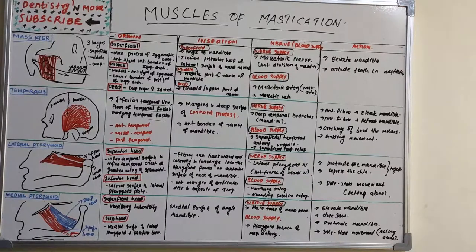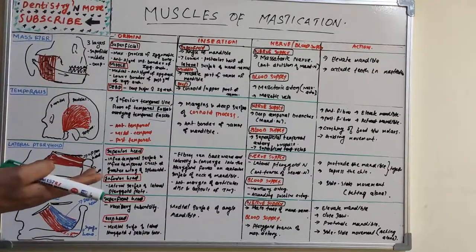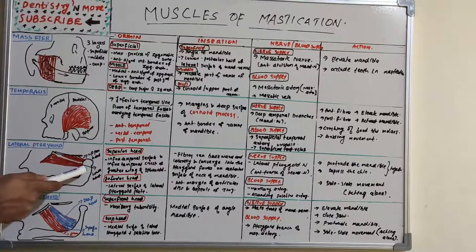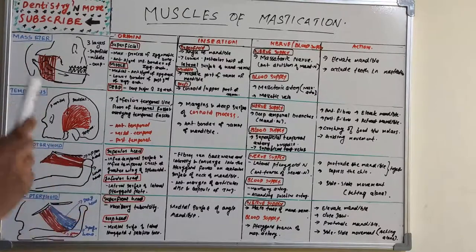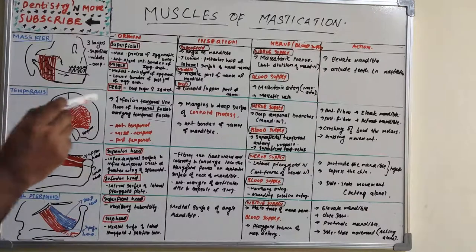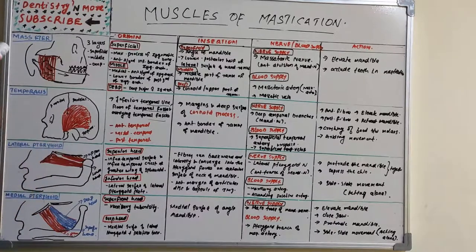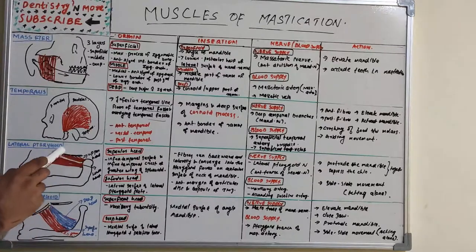The lateral pterygoid muscle, also known as the external pterygoid, occupies a horizontal position — unlike the other muscles which run vertically. It is a thick, short, conical, and triangular muscle with two heads — a superior head and an inferior head.